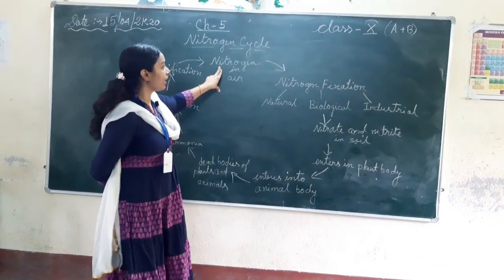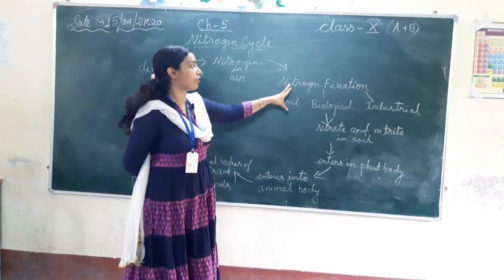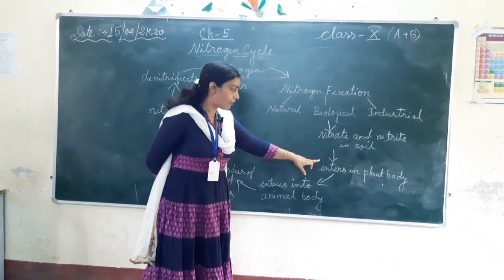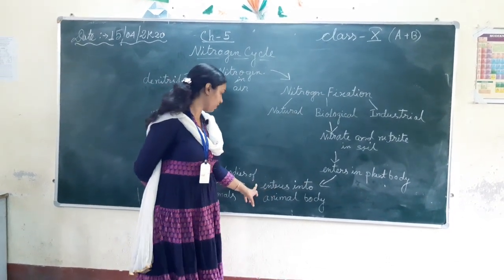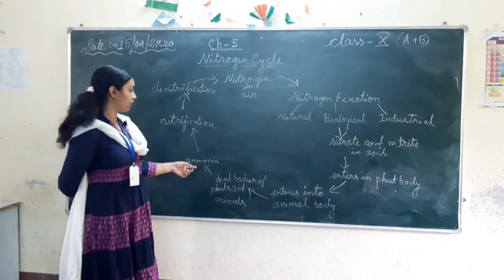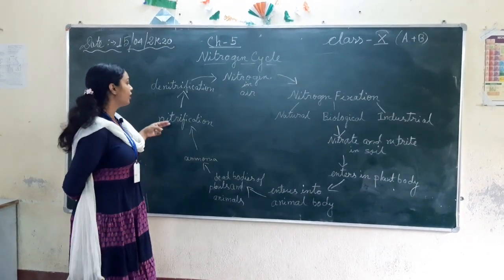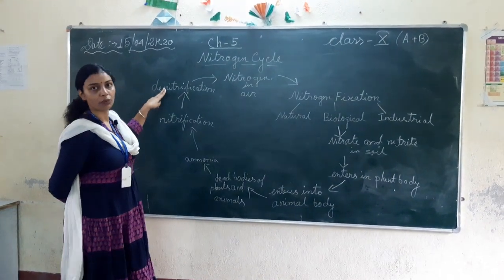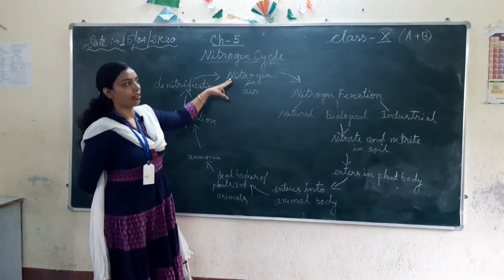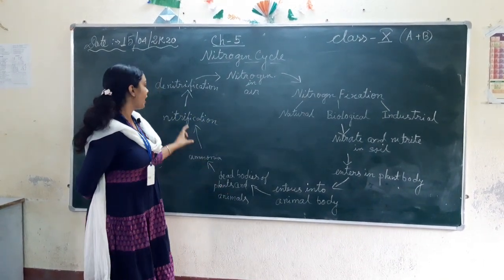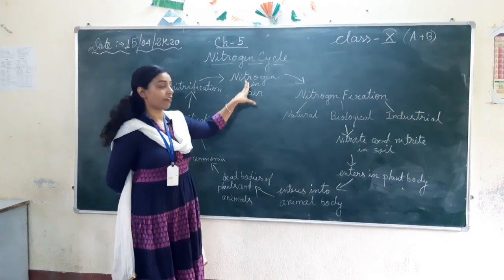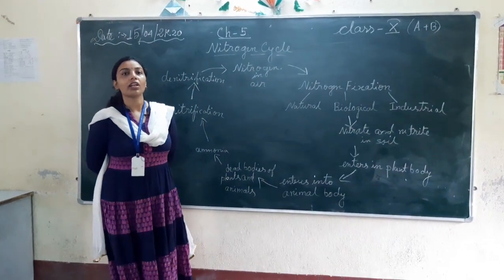So, we have seen that the nitrogen in the air first goes through the process of nitrogen fixation. Then it goes into the soil as nitrite or nitrate, then it enters into the plant body, after that it enters into the animal body. The dead bodies of plants or animals are decomposed and turned into ammonia through ammonification. After ammonification comes nitrification, and after nitrification comes denitrification, where the soil loses fertility and the nitrogen goes back into the air, completing the total cycle.